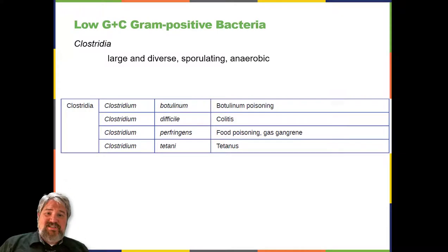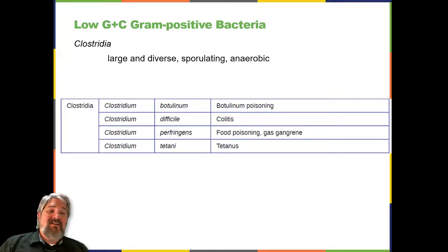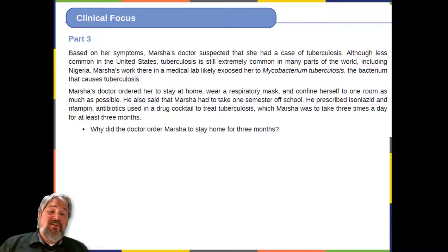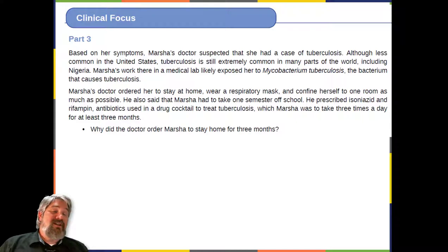Low-GC Gram-positive bacteria have less than 50% guanine and cytosine in their DNA, and this group includes a number of pathogenic genera. Clinical Focus, Part 3: Based on her symptoms, Marsha's doctor suspected that she had a case of tuberculosis. Although less common in the United States, tuberculosis is still extremely common in many parts of the world, including Nigeria.